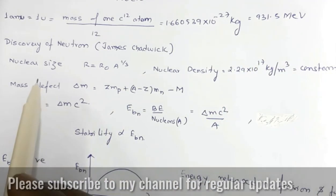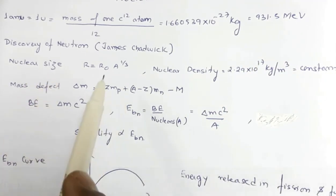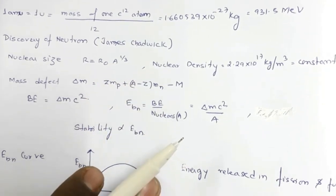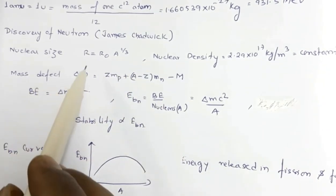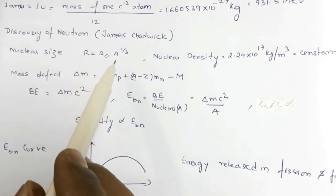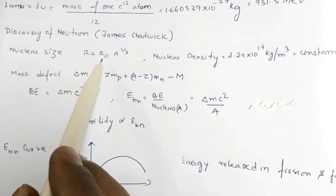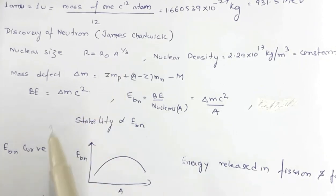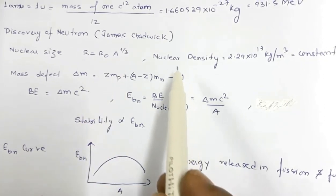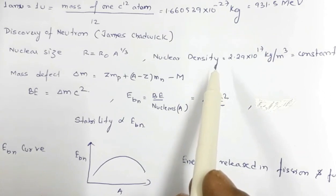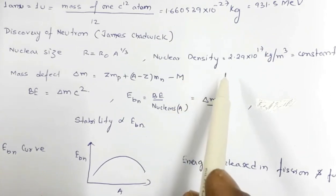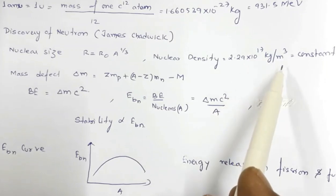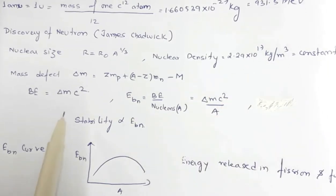Next is the discovery of the neutron by James Chadwick. Then the concept of nuclear size — the nuclear radius is proportional to mass number by the relation R = R₀ × A^(1/3), where A is the mass number. Then nuclear density — you have to prove that nuclear density is constant for all nuclei, and its value is 2.29 × 10¹⁷ kg/m³.